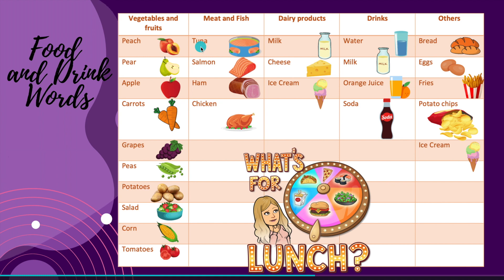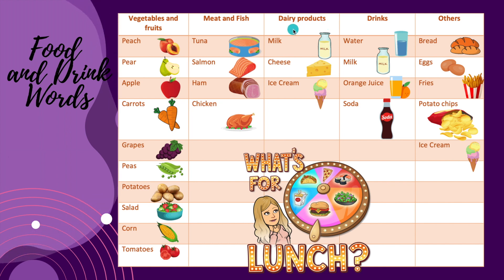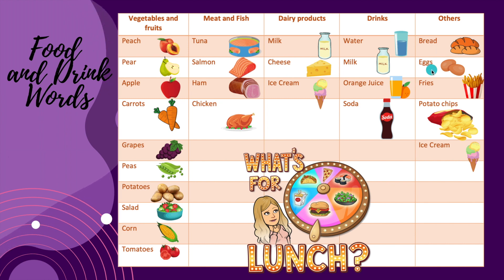Meat and fish: tuna — remember tuna is 'atún,' not a fruit — salmon, and chicken. Dairy products — not 'productos diarios' but 'productos lácteos': milk, cheese, and ice cream. Drinks: water, milk, orange juice, and soda. And finally, the others category: bread, eggs, fries, potato chips, and ice cream.